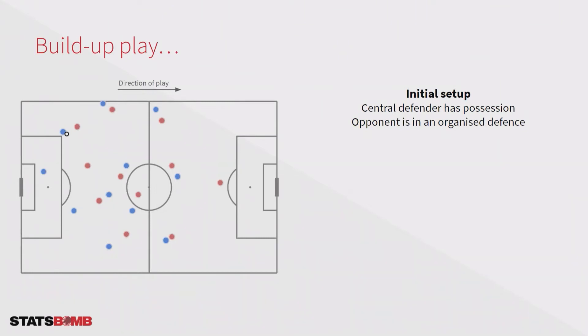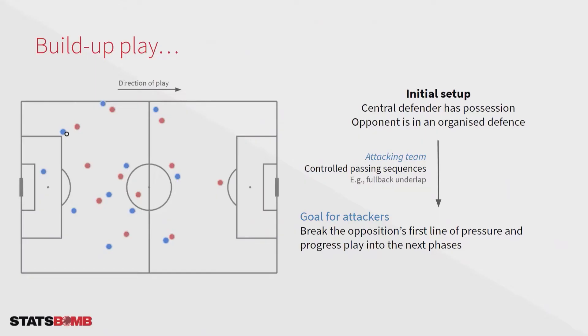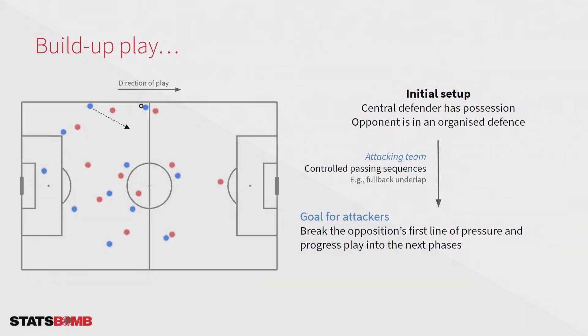Build-up play is one of the most structured phases in soccer. It often starts with a defender in possession of the ball and all other players in front of it. The goal of the attacking team is to break the opposition's first line of pressure and progress the play. Teams often create controlled passing sequences to do this — for example the fullback underlap, where the center back plays the ball to the fullback, who sends it up the wing and takes off running upfield.